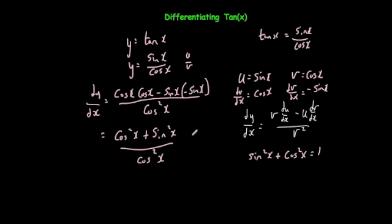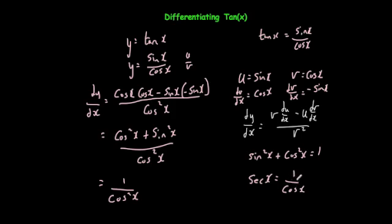Remember the identity: sin squared plus cos squared is equal to 1. That means the top line, just switching these around, would be equal to 1. So we've got 1 over cos squared x. Remember also that sec x is equal to 1 over cos x, so 1 over cos squared x is equal to sec squared x. Therefore, if y is equal to tan x, when you differentiate it, it equals sec squared x.